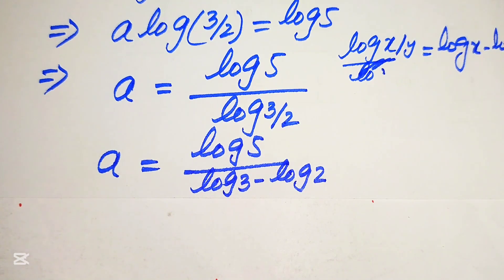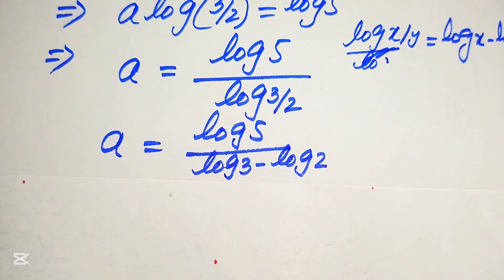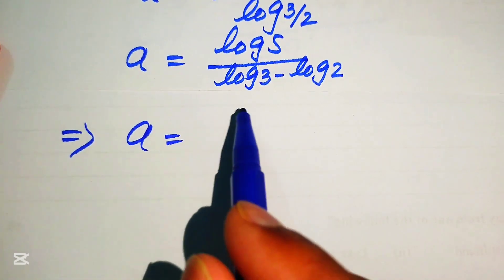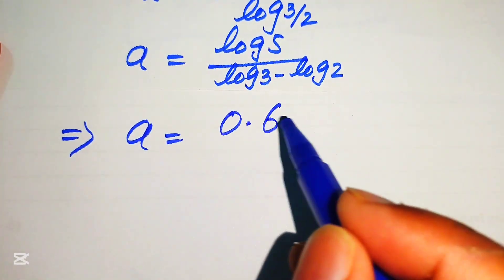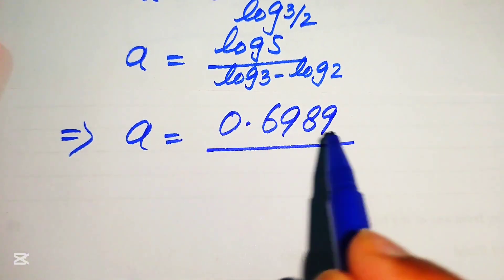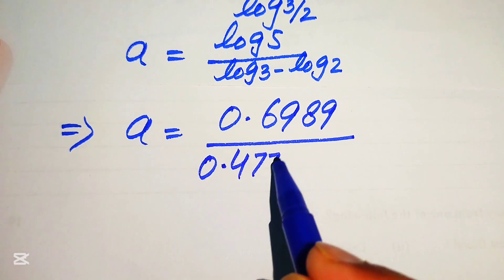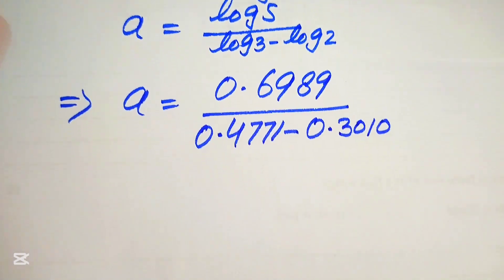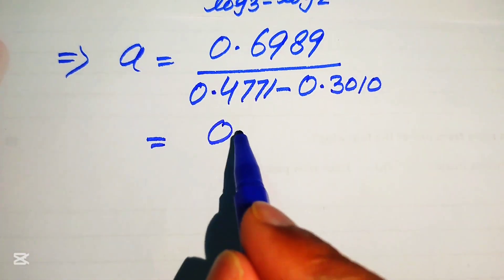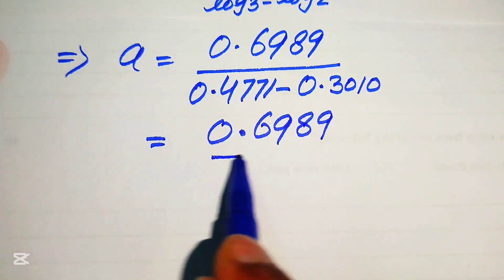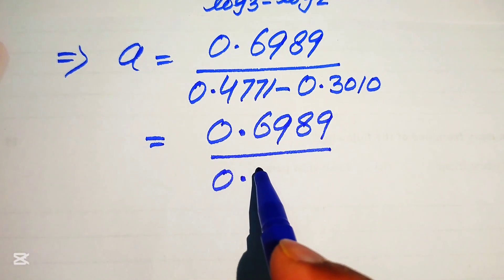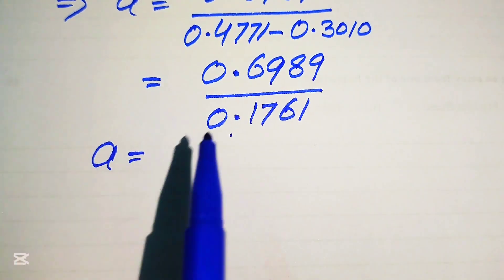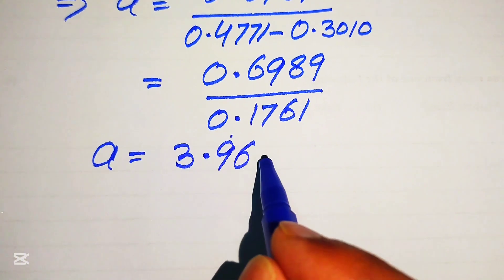We need a calculator or logarithmic table to find the values of log 2, log 3, and log 5. Using a calculator: log 5 equals 0.6989, log 3 equals 0.4771, and log 2 equals 0.3010. So a equals 0.6989 divided by (0.4771 minus 0.3010), which gives 0.6989 divided by 0.1761, and when we divide these two values we get a equals 3.969.